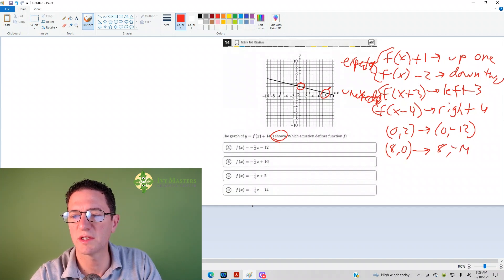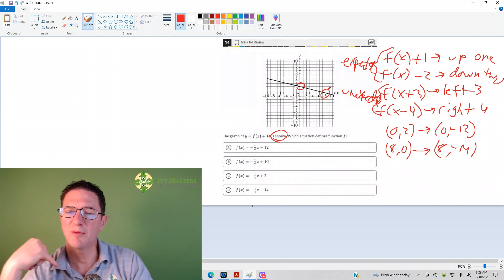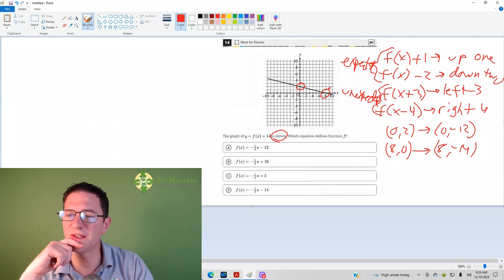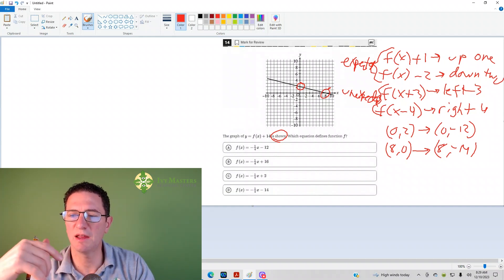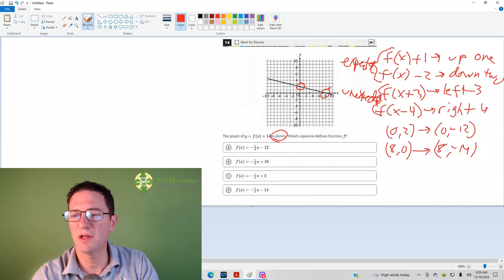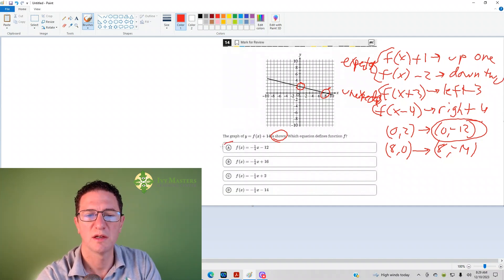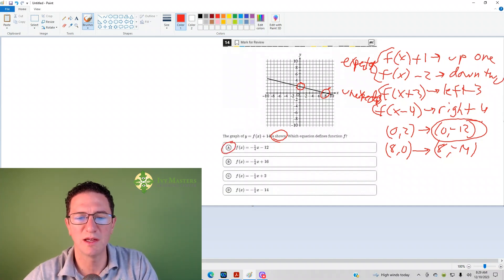Now, I could plug either of these points in and eliminate anything that doesn't work. Now, look at how easy it is to plug 0 in for x and eliminate anything that doesn't give you negative 12 for f of x. The answer's got to be A.